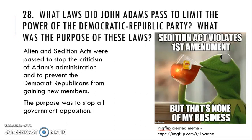Question 28 asks what laws did John Adams pass to limit the Democrat-Republican Party's power and what was their purpose? The Alien and Sedition Acts were passed to stop criticism of Adams' administration. The Democrat-Republicans, led by his own VP Thomas Jefferson, owned and operated the newspapers publishing things damaging to Adams. The Sedition Act said you can't criticize the government — a violation of the First Amendment. The Alien Act increased the years required to become a U.S. citizen, preventing new immigrants who were joining the Democrat-Republican Party from voting. The purpose was to stop opposition to the Federalist-led government.